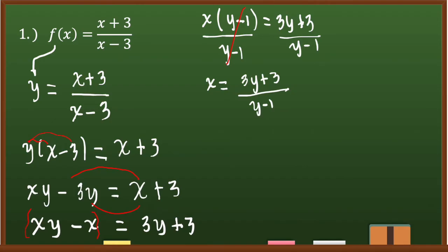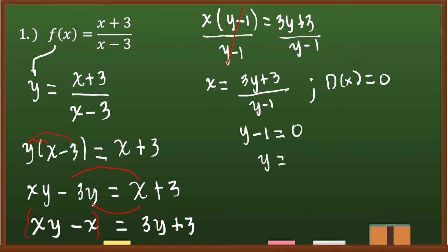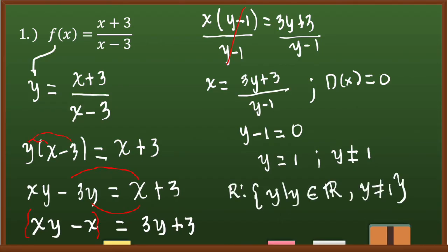Applying the same rule as finding the domain, we set the denominator equal to zero: y - 1 = 0, so y = 1. Since y = 1 is a restriction, y must not equal 1. Therefore the range is the set of all y such that y is an element of real numbers where y ≠ 1.